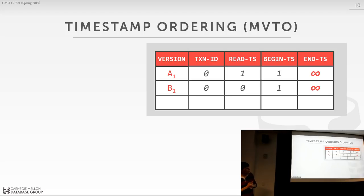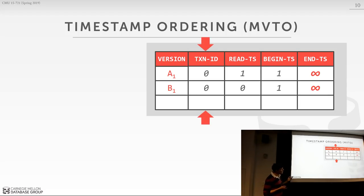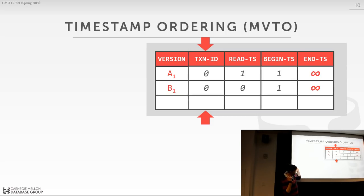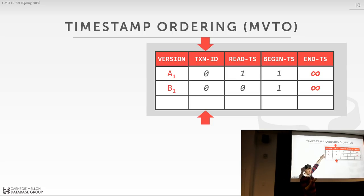Let's look at multi-version timestamp ordering. In this example, some transaction at timestamp 1 inserted two tuples, A and B. The 'version' column is just for illustration purposes — it's not actually stored in the system. We have the transaction ID, used to keep track of whether a transaction is actively modifying the tuple: zero means nobody is working on it, and any other number means someone holds the latch. Then we have the begin and end timestamps — begin is 1, end is infinity, meaning this is the newest version of these tuples.